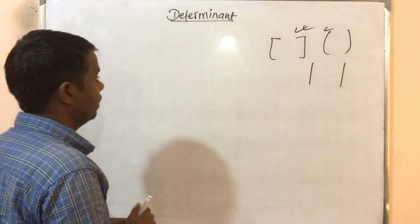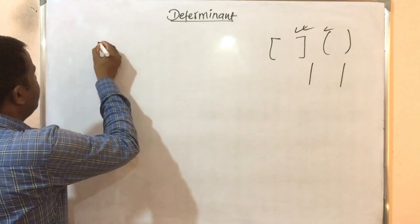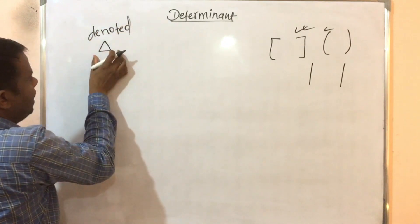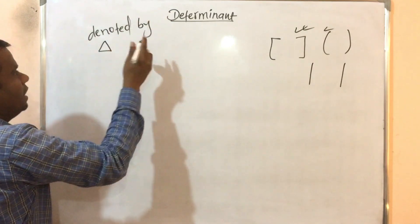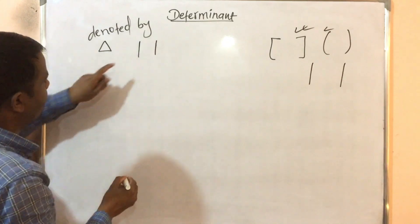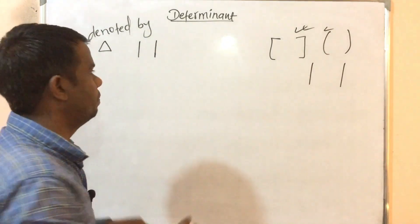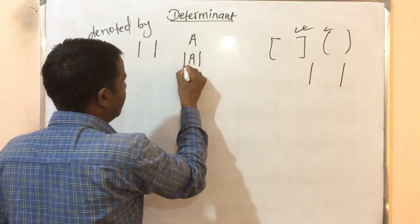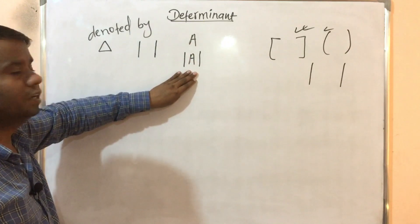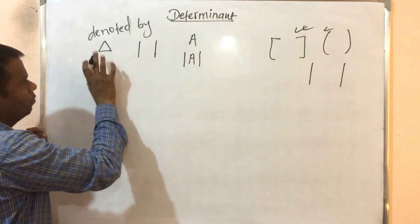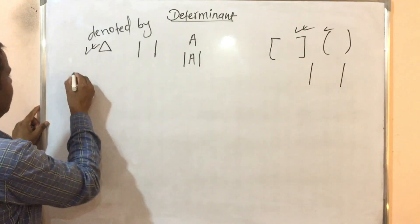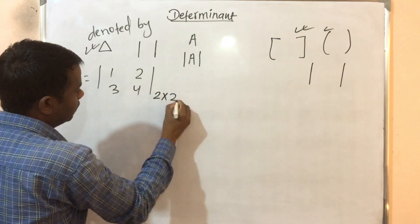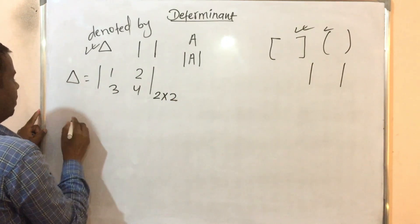Determinants are denoted by a sign. The way to denote a determinant is using vertical lines on either side of the matrix elements — vertical line brackets. If we have a matrix and want to write its determinant, we place the elements inside vertical lines. For example, a two by two matrix with elements one, two, three, four written inside vertical lines represents its determinant.